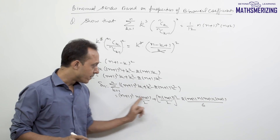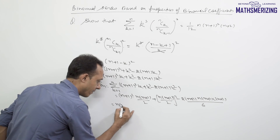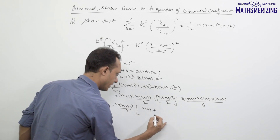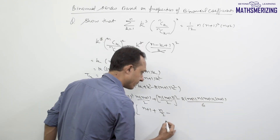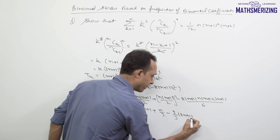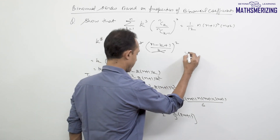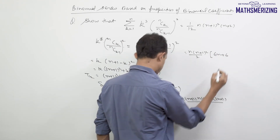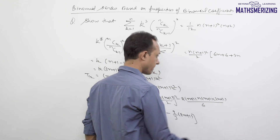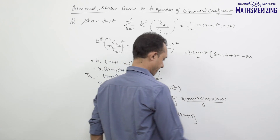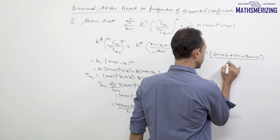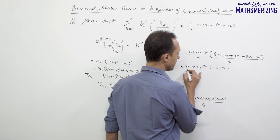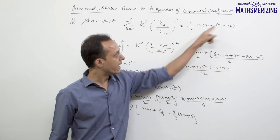Taking n(n+1)²/2 common from all terms, I'm left with (n+1) + n/2 - (2/3)(2n+1). Taking LCM of 6: numerator becomes 6n+6 + 3n - 8n-4 = n+2. So the final answer is n(n+1)²(n+2)/12.